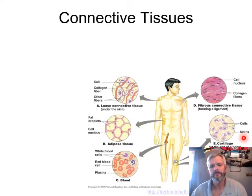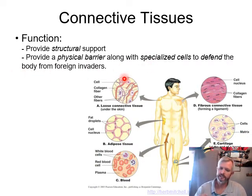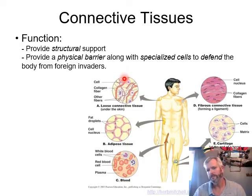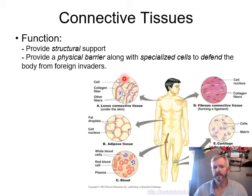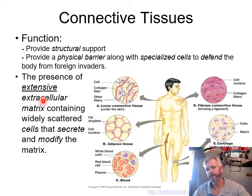Connective tissue is our structural tissue. It's not going to be focused on a lot through physiology. What makes it unique is it typically has that extensive extracellular matrix, which differs from epithelial, where cells are packed up next to each other.